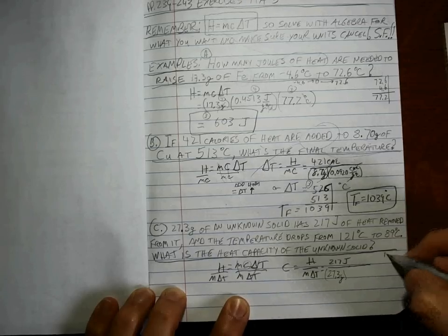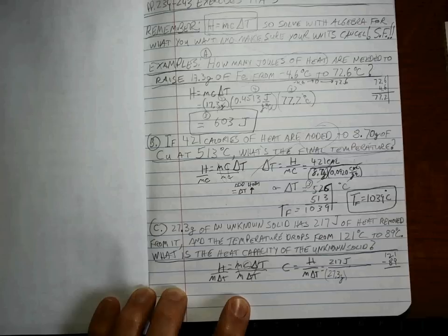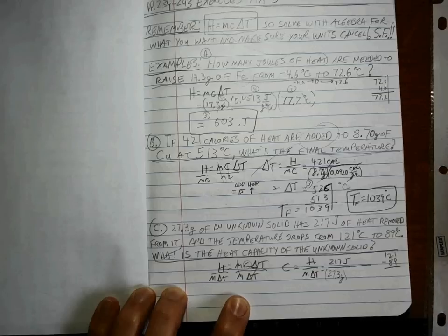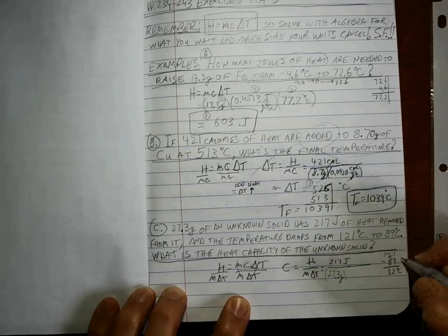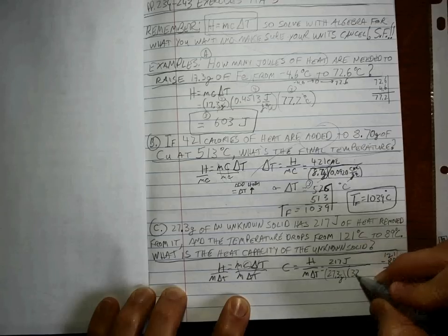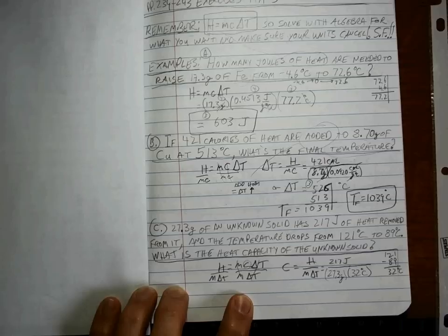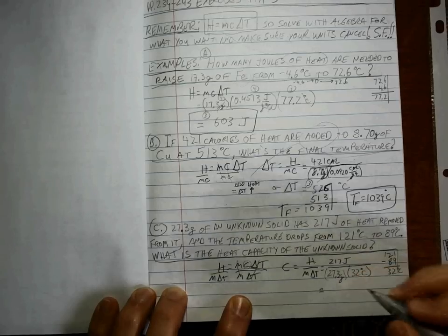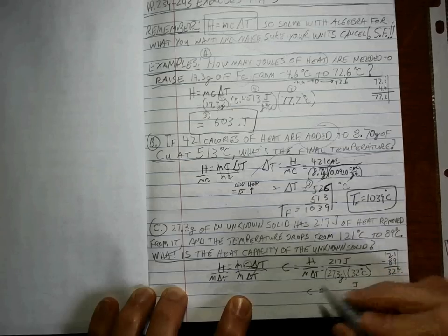And we know the temperature change drops from 121 down to 89, and 121 minus 89 is 32, and that's the temperature change with two sig figs. So what units do we cancel here? Well none, but that's okay because we want our units to be joules per gram per degree C. That's what a heat capacity is.